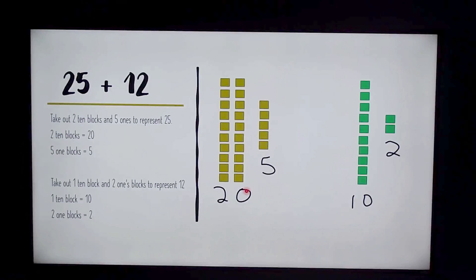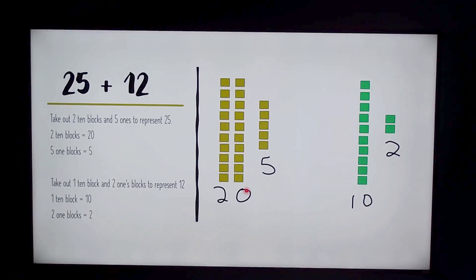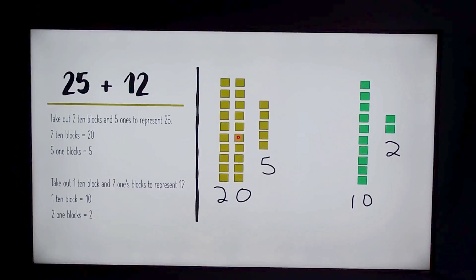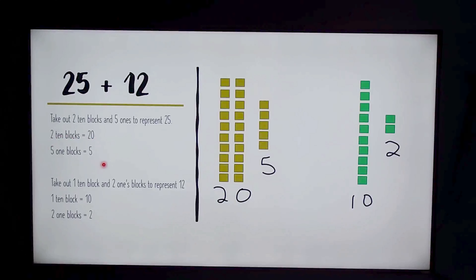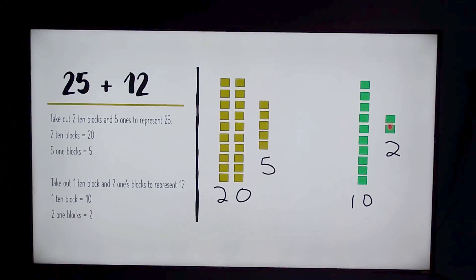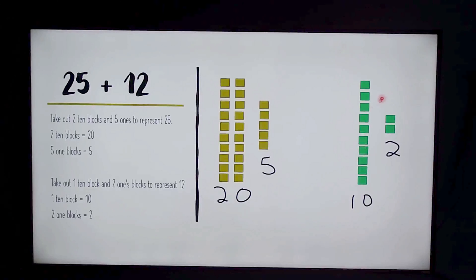The first equation is 25 plus 12. We're first going to take out two 10-blocks and five 1s to represent 25. Two 10-blocks equals 20 and five 1-blocks equals 5. Next we take out one 10-block and two 1-blocks to represent 12. One 10-block equals 10 and two 1-blocks equals 2.